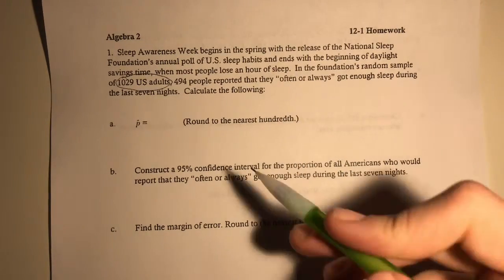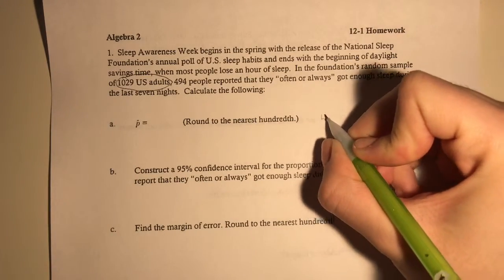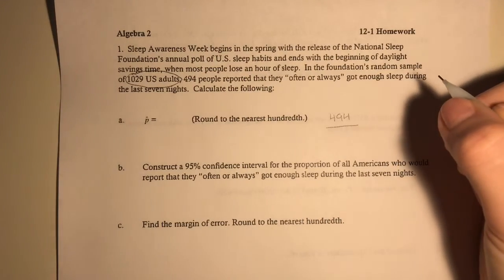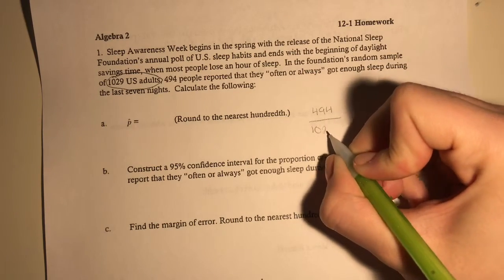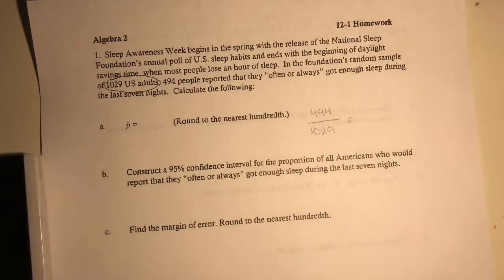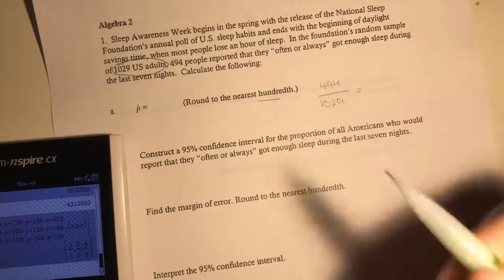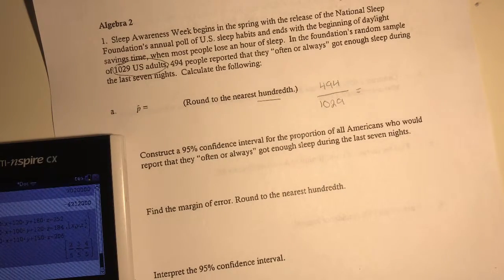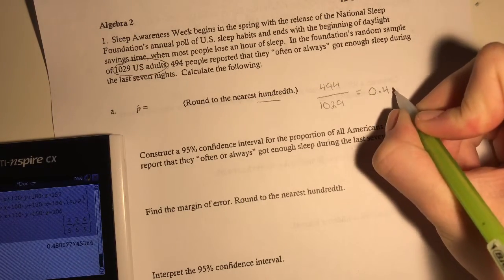So for p-hat, we're just going to take the number of people who reported that they often or always had enough sleep, and we're going to put that over the total of 1,029 adults. And we can put this into decimal form. 494, yep, it says round to the nearest hundredth, so we're going to just divide that. And we get 0.48.